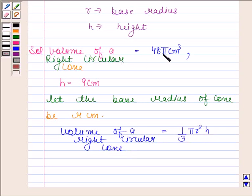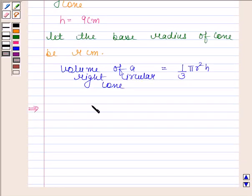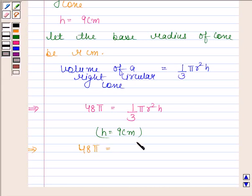So this implies 48π = 1/3 πr²h. Now h is given as 9 cm. By substituting the value of h, we get 48π = 1/3 × π × r² × 9.